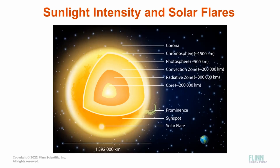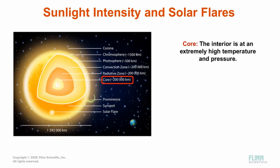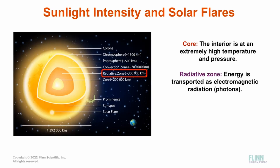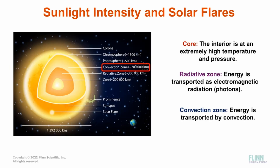The sun has three main parts that make up its structure: the core, the radiative zone, and the convection zone. The core is at an extremely high temperature and pressure, which is what makes nuclear fusion possible. The radiative zone is the next layer after the core — this is where the energy generated in the core is transported in the form of electromagnetic radiation. The last layer is the convection zone, where the energy is transferred by convection instead of radiation.